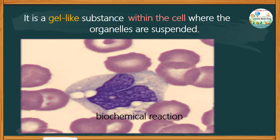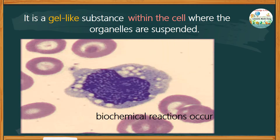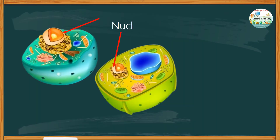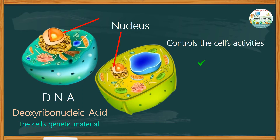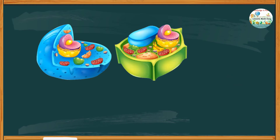The nucleus contains the DNA, which stands for deoxyribonucleic acid — the cell's genetic material. The nucleus also controls the cell's activities, including growth, metabolism, and reproduction.